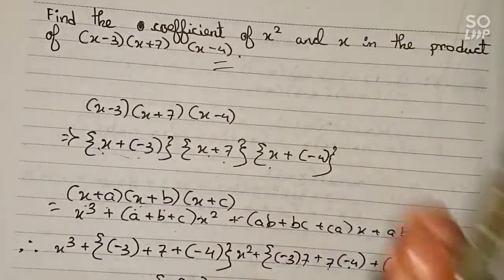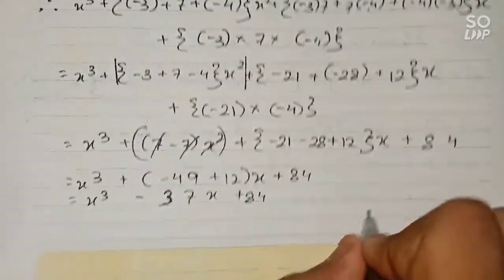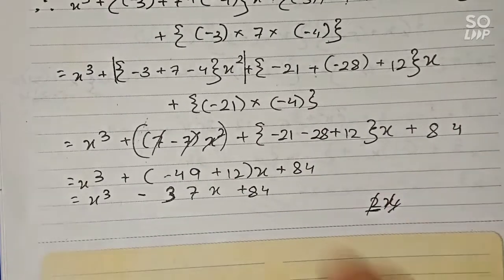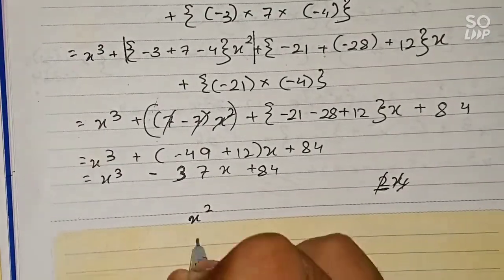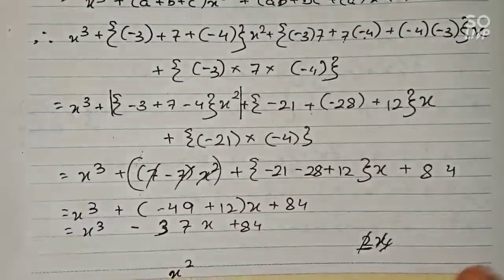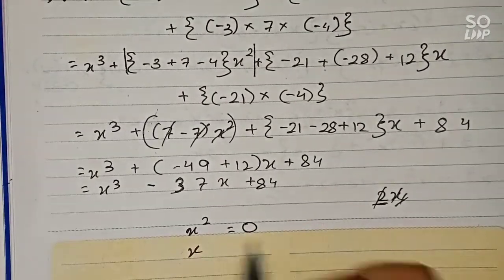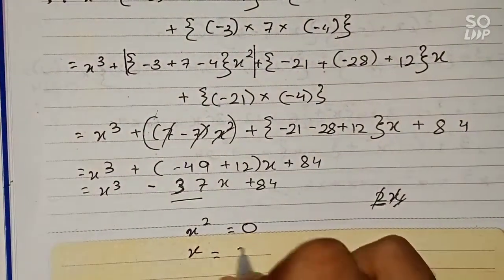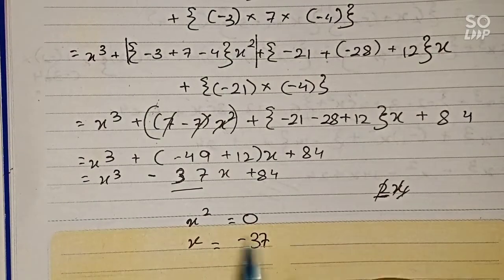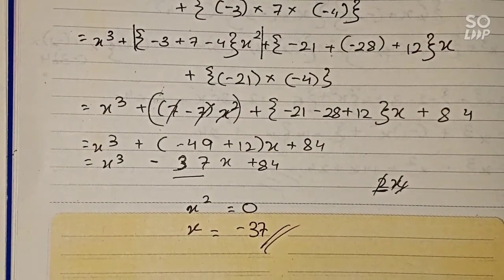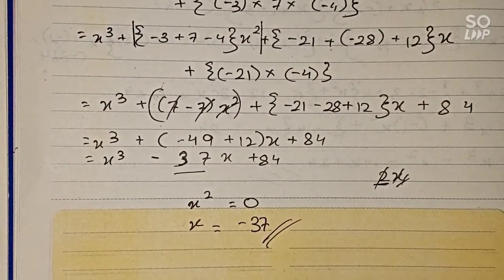In the question we are asked to find the coefficient of x squared and x. The coefficient of a term means the number multiplying it — for example, in 2x, 2 is the coefficient. So the coefficient of x squared is 0 (since that term was eliminated), and the coefficient of x is minus 37. This is our final answer. Thanks for watching this video, please subscribe for more solutions.